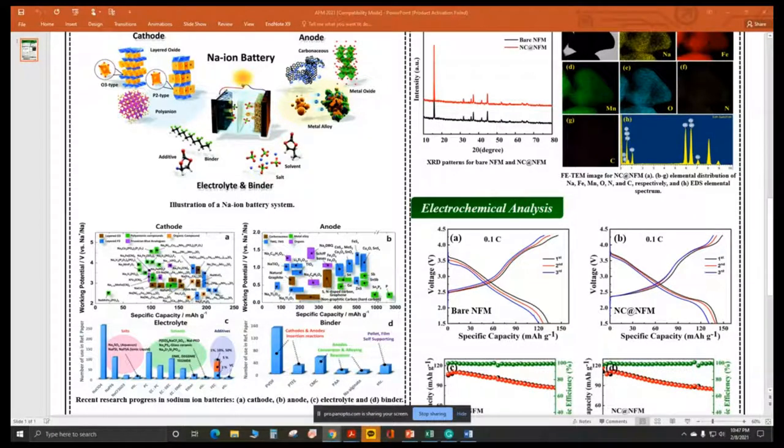We synthesized sodium iron manganese oxide as a cathode for sodium ion batteries and it has some drawbacks such as poor cycling stability and poor rate capabilities. In order to rectify these limitations, we introduced nitrogen carbon into the active material.